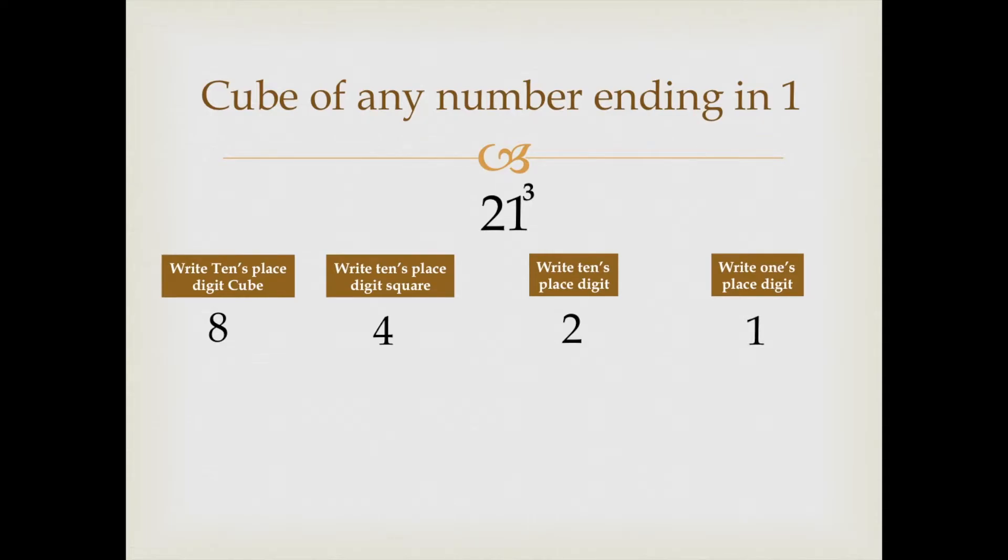Now, as we did it in the earlier video, we will ignore the first and the last digit and the middle two digits would be multiplied by 2. Like this.